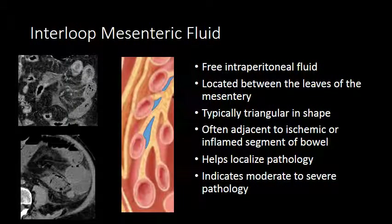Interloop mesenteric fluid is an important feature to be able to recognize on CT. Mesenteric fluid is most commonly seen as free intraperitoneal fluid and courses down the pericolic gutters or collects in the pelvis. When you see interloop mesenteric fluid, this is intraperitoneal fluid that is not loculated but is likely being produced locally from abnormal bowel or abnormal mesentery, and the fluid gets trapped under the leaflets of the mesentery.